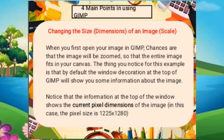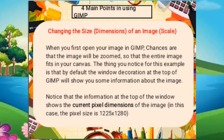Now let us explore the four main points in using GIMP. Number one is changing the size or dimension of an image — scale. When you first open your image in GIMP, chances are that the image will be zoomed so that the entire image fits in your canvas. By default, the window decoration at the top of the GIMP will show you some information about the image. Notice that the information at the top of the window shows the current pixel dimensions of the image. In this case, the pixel size is 1225 by 1280.